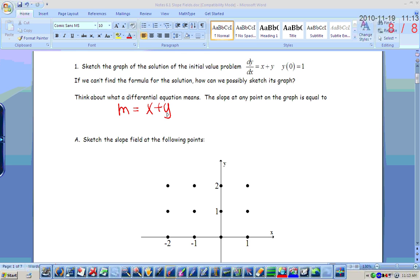So, sketch the slope field at the following points. So, like at the point zero, zero, if x is zero and y is zero, what's the slope? Zero. Zero. And so, we just draw a little horizontal bar.